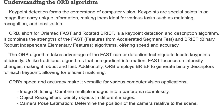Keypoint detection forms the cornerstone of computer vision. Keypoints are special points in an image that carry unique information, making them ideal for various tasks such as matching, recognition, and localization. ORB, short for Oriented FAST and Rotated BRIEF, is a keypoint detection and description algorithm. It combines the strengths of the FAST (Features from Accelerated Segment Test) and BRIEF (Binary Robust Independent Elementary Features) algorithms, offering speed and accuracy.